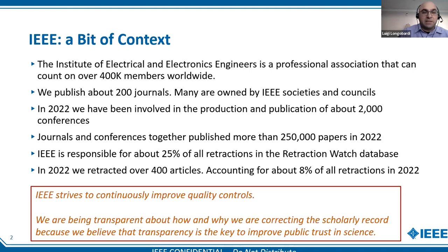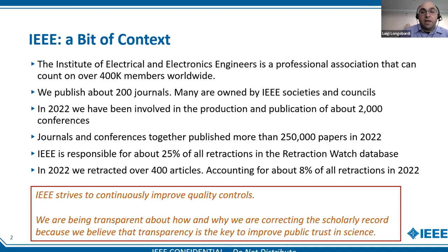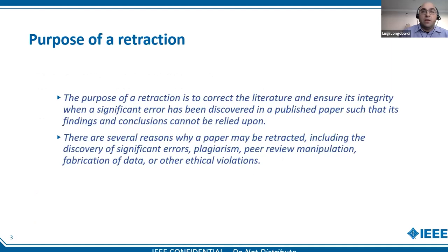One reason we are involved in a webinar like this is that we alone are responsible for about one quarter of all retracted articles in the Retraction Watch database. This is because our members take publishing integrity very seriously and demand that we continuously monitor and correct the record. The 25% figure is mostly due to a famous event about 10 years ago where we retracted 7,000 papers all at once, which is really the reason why we have that figure being so large. Recently, our numbers have gone down. This year, we were responsible for about 400 retractions, the majority of which was due to retracting altogether content from three years of the same conference.